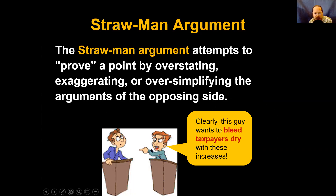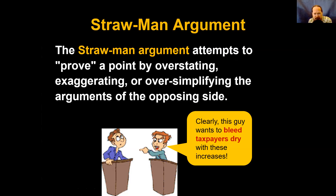You're trying to convince people who don't have the same opinion as you — you're not preaching to the choir. You're trying to persuade people who think differently, and if you're misrepresenting and oversimplifying their views, they're not going to find you convincing. How can they be expected to change their opinions when you can't even accurately represent what they believe?